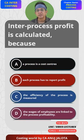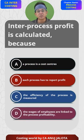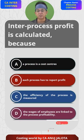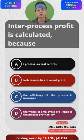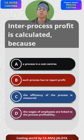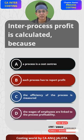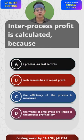First of all, inter process profit means what? It can only occur whereby one department transfers the goods to the next department not at cost but at a markup price. That markup price is called the transfer price. This will be done whenever each process is going to be treated as a profit center.